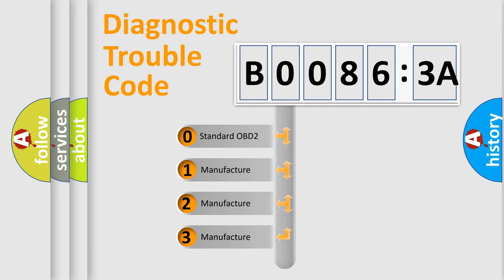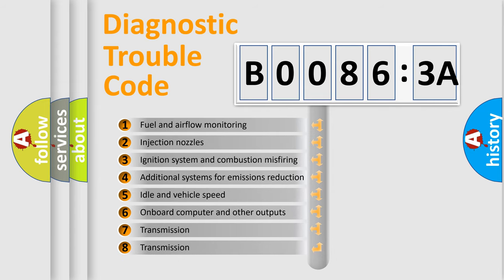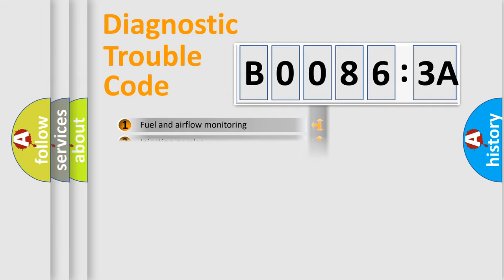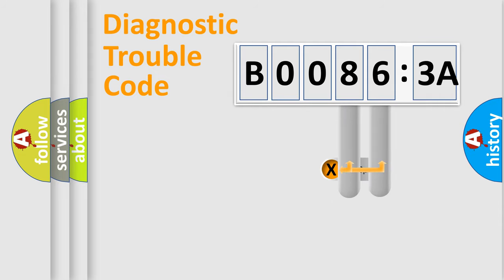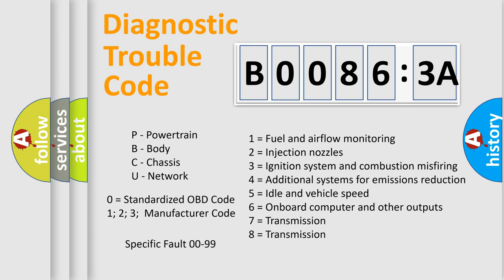If the second character is expressed as zero, it is a standardized error. In the case of numbers 1, 2, or 3, it is a more specific expression of the car-specific error. The third character specifies a subset of errors. The distribution shown is valid only for the standardized DTC code. Only the last two characters define the specific fault of the group. The add-on to the error code serves to specify the status in more detail, for example, short to ground. Let's not forget that such a division is valid only if the second character code is expressed by the number zero.